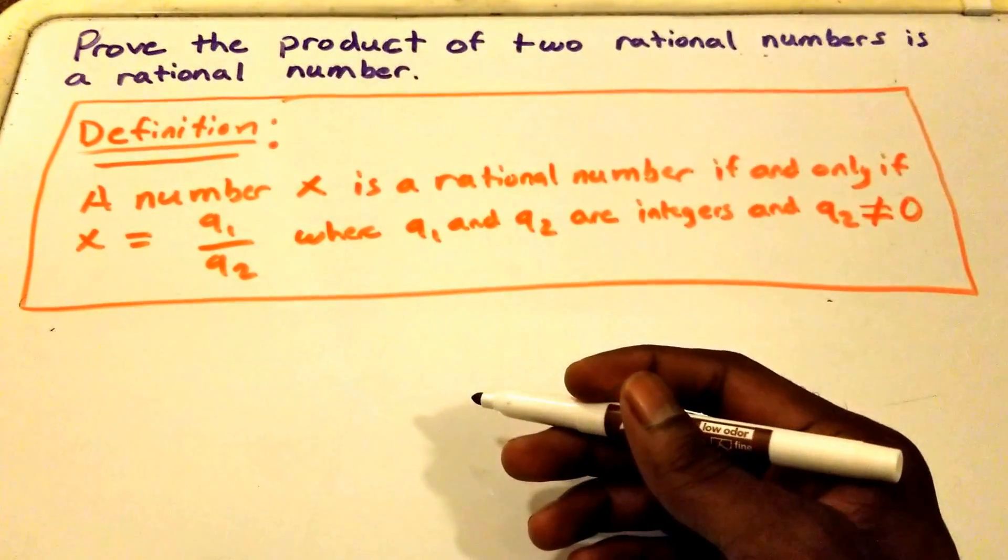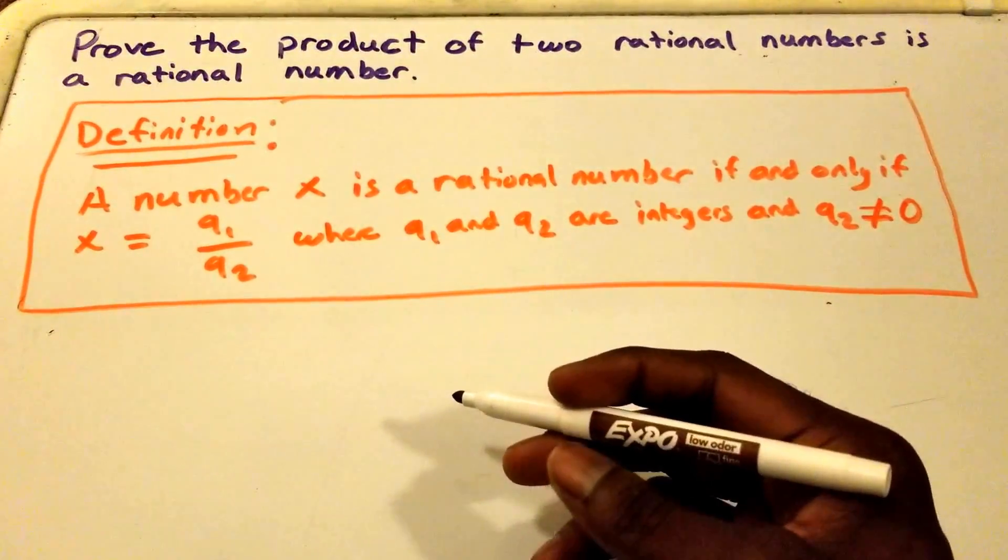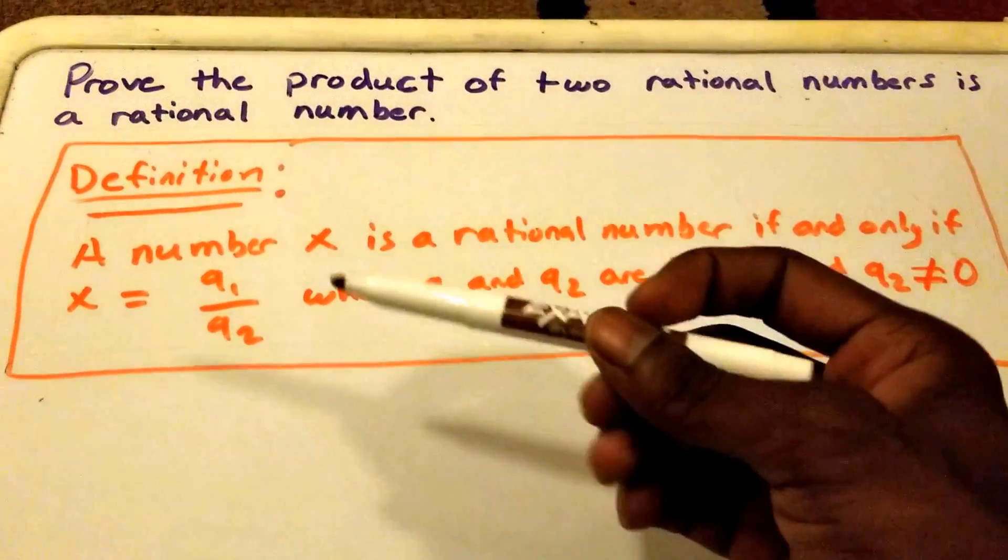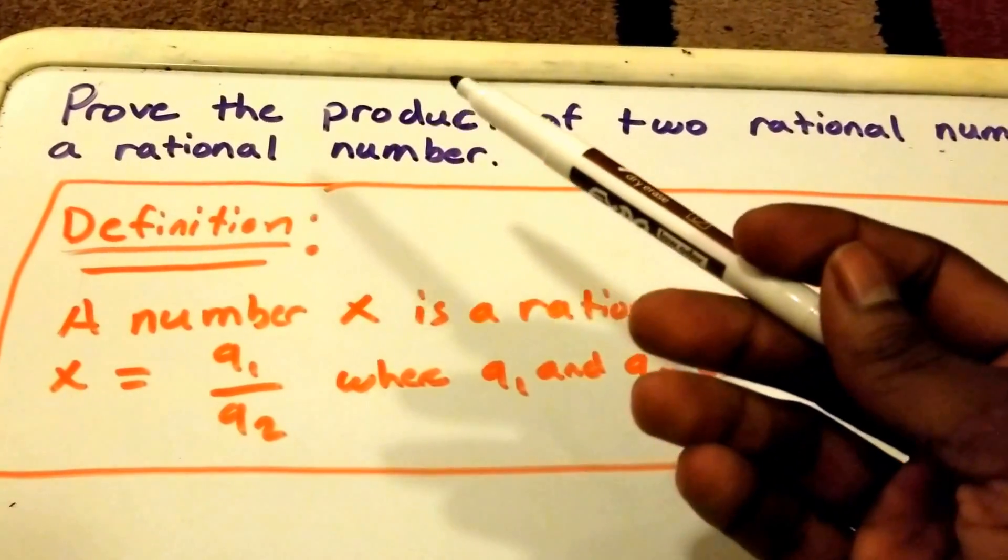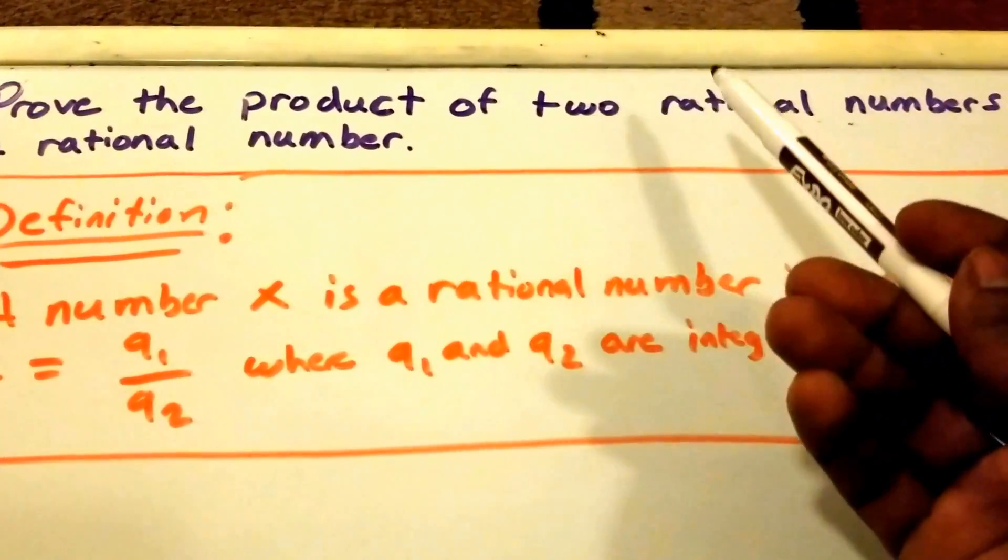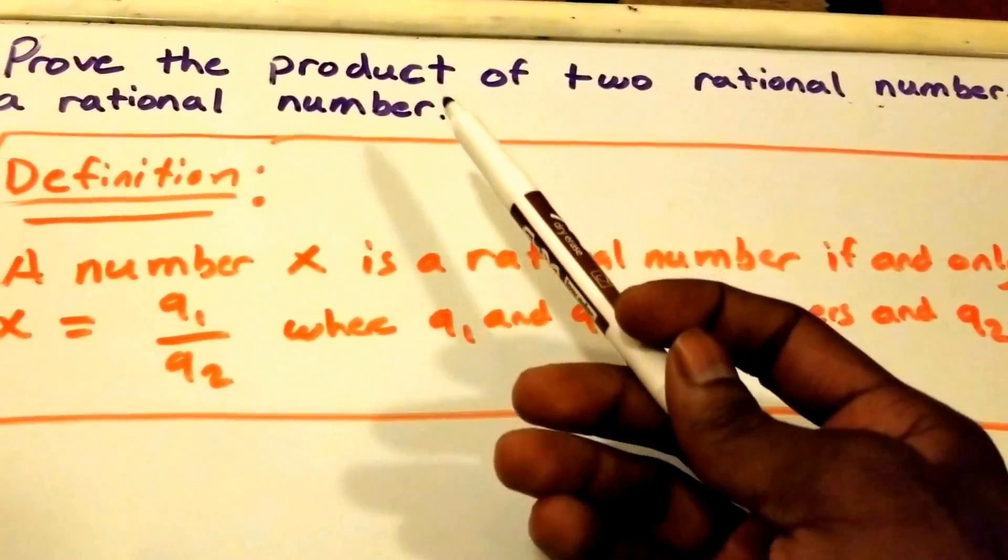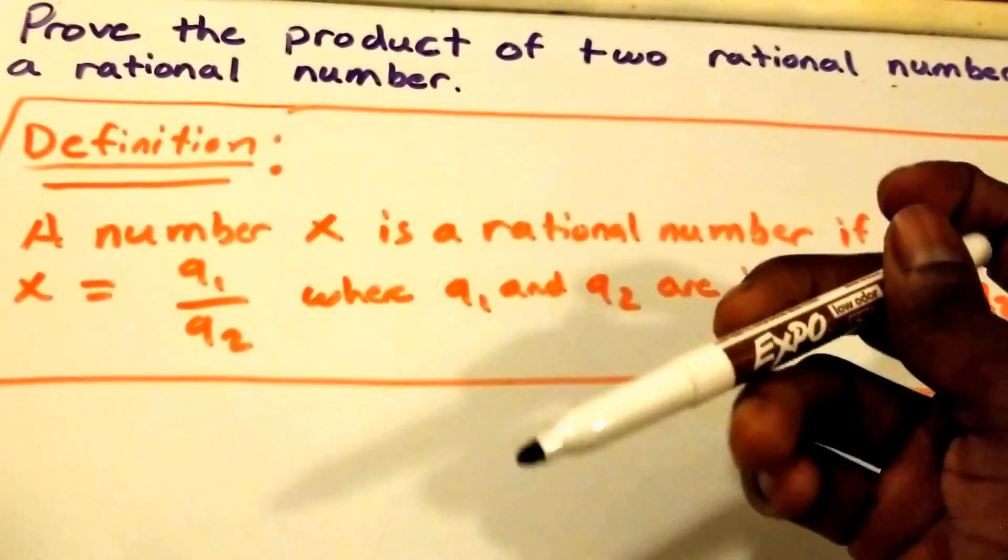Hey guys, welcome to this video on the methods of direct proof. Here in the purple we have our problem: it states prove the product of two rational numbers is a rational number. So that's what we want to figure out here.